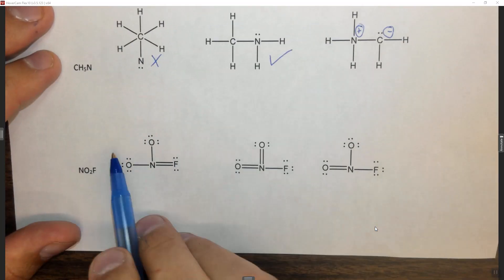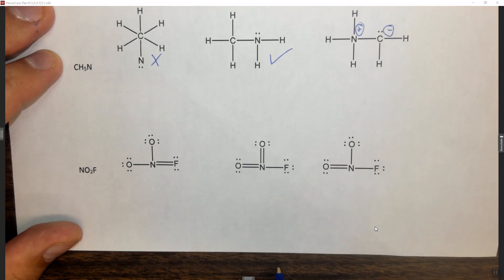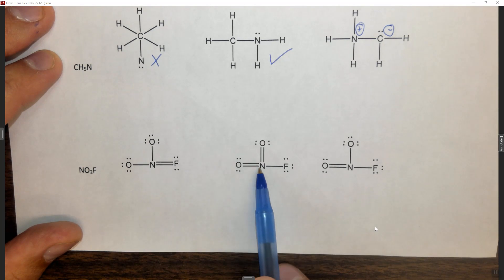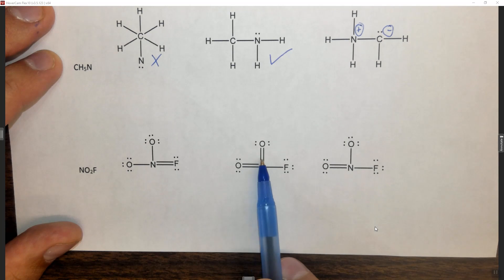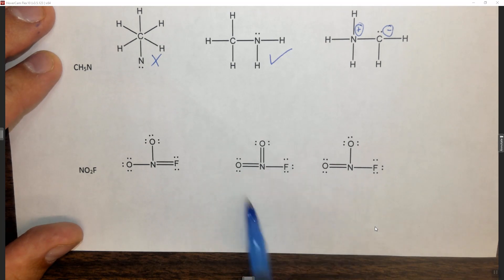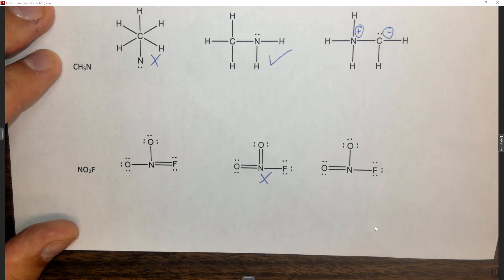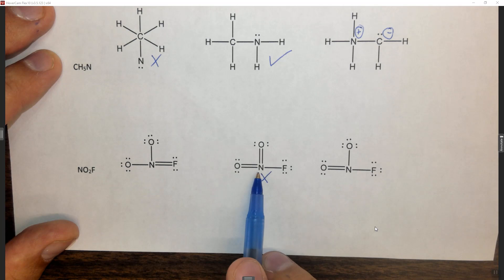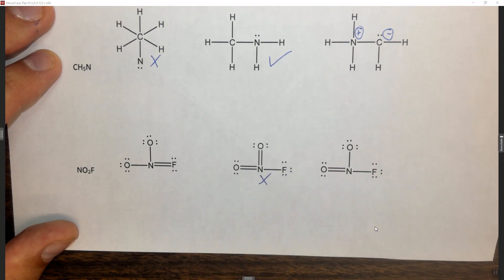We have NO2F. Let's take a look for anything that immediately strikes us as impossible. If we look at this Lewis structure, nitrogen has two, four, six, eight, ten electrons — this has an expanded octet on nitrogen, which is not valid. So we can eliminate this Lewis structure. Nitrogen is in period two; it's too small to have an expanded octet, so this Lewis structure is no good.